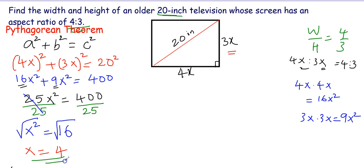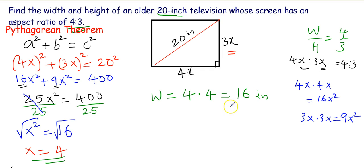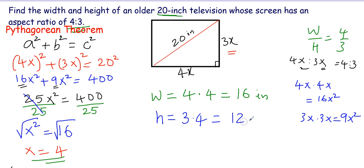Since x equals 4, the width of the screen is W equal to 4 times x, which is 4 times 4 equals 16 inches. The height of the screen is 3 times x, so 3 times 4 equals 12 inches.